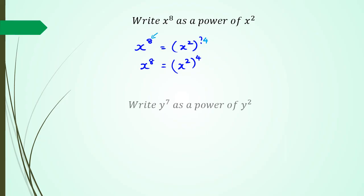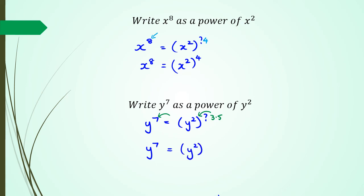One more question: write y to the power of 7 as a power of y squared. We have y to the power of 7 equals y squared to the power of something. What number multiplied by 2 equals 7? That's 3.5. So y to the power of 7 equals y squared to the power of 3.5, or 7 over 2 — both give the same answer. That's it for this session — don't forget to like, share, and subscribe. Thanks for watching!